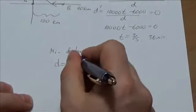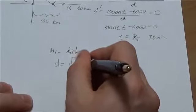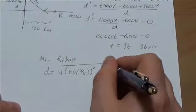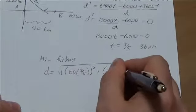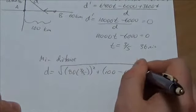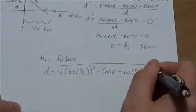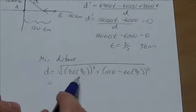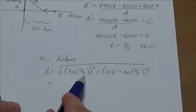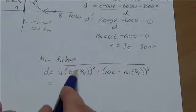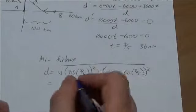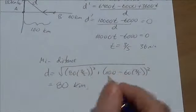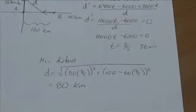So d is going to equal the square root of [80(3/5)]² plus [100 - 60(3/5)]², and that is all squared. And after just a little bit of work here, we see that 80 divided by 5 is 12 times 3. Anyway it works out here really quickly that this all becomes 80. I just set up my calculator a little while ago, and we get the minimum distance here is 80 kilometers.